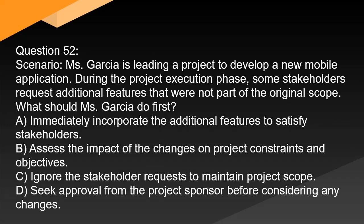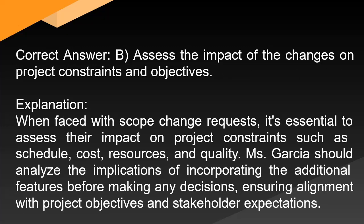Question 52: Ms. Garcia is leading a project to develop a new mobile application. During the project execution phase, some stakeholders request additional features that were not part of the original scope. What should Ms. Garcia do first? A. Immediately incorporate the additional features to satisfy stakeholders. B. Assess the impact of the changes on project constraints and objectives. C. Ignore the stakeholder requests to maintain project scope. D. Seek approval from the project sponsor before considering any changes. Correct answer: B. Assess the impact of the changes on project constraints and objectives. Explanation: When faced with scope change requests, it's essential to assess their impact on project constraints such as schedule, cost, resources, and quality before making any decisions, ensuring alignment with project objectives and stakeholder expectations.